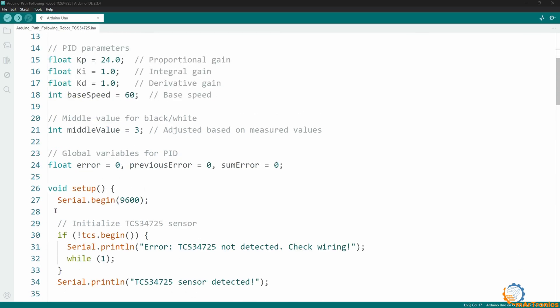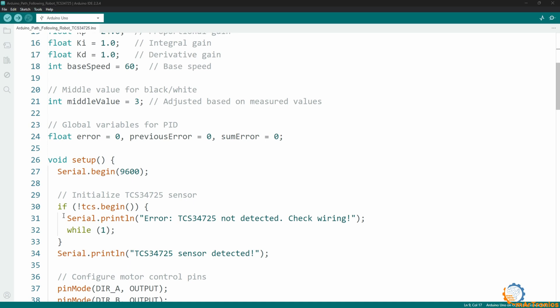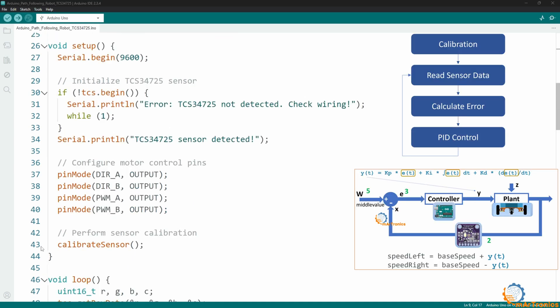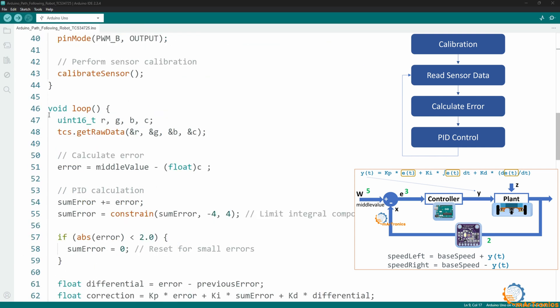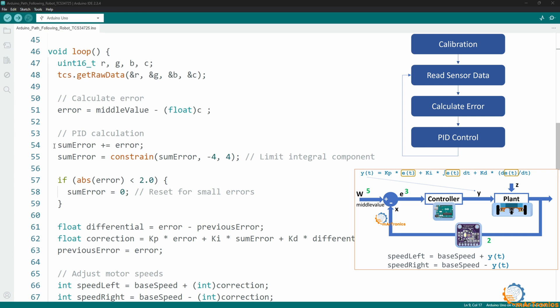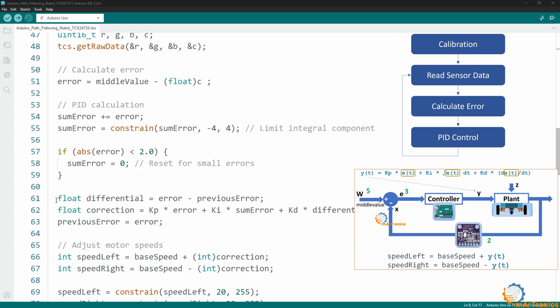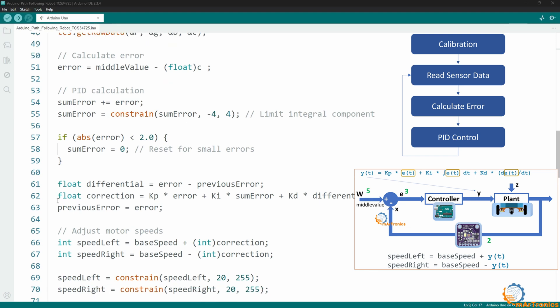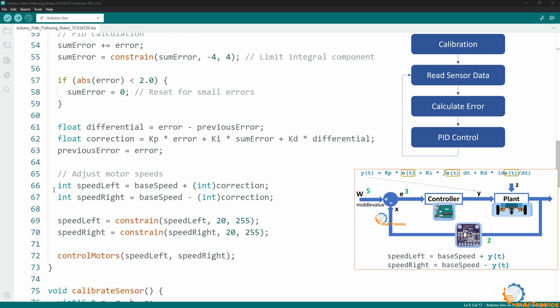As for the setup function, I activated the serial connection to display the values on the computer. Then I checked for the presence of the sensor TCS34725 and then called this function calibrate sensor to calibrate the sensor and measure the values for the black and white surfaces. Then we have the main function, loop, where we read the values from the color sensor and then calculate the error, subtracting the read value from the average value that we calculated through calibration. Then we collect the errors for integration. After that, we calculate the rate of change in error, differential. After that, we calculate the correction based on the PID control equation, where we use the coefficients and multiply them by the error, the sum of the errors, integral, then the rate of change of the error, and we use this correction to adjust the speed of the motors.